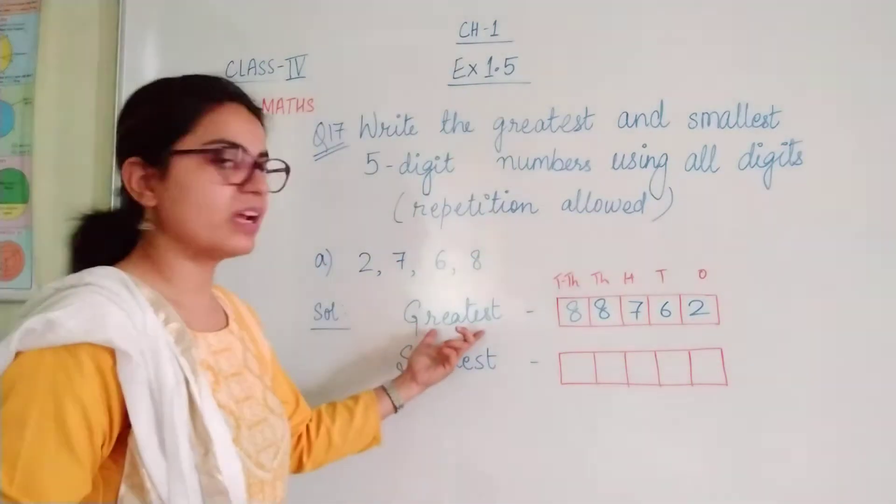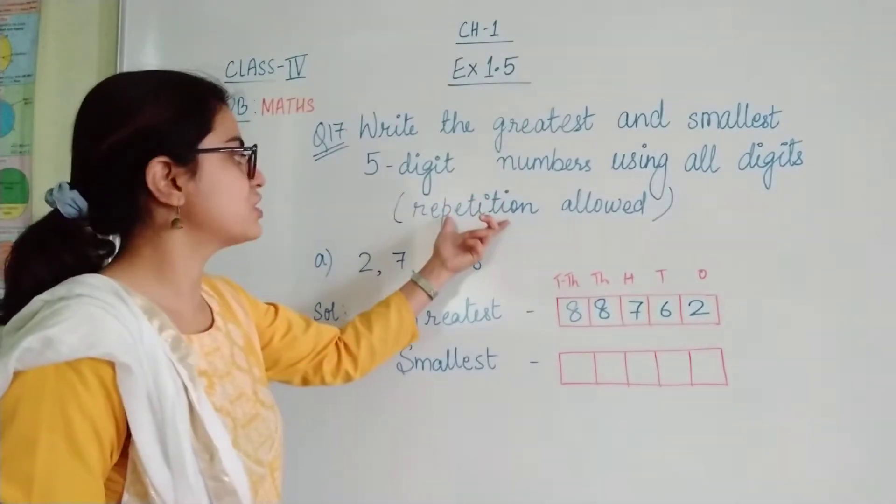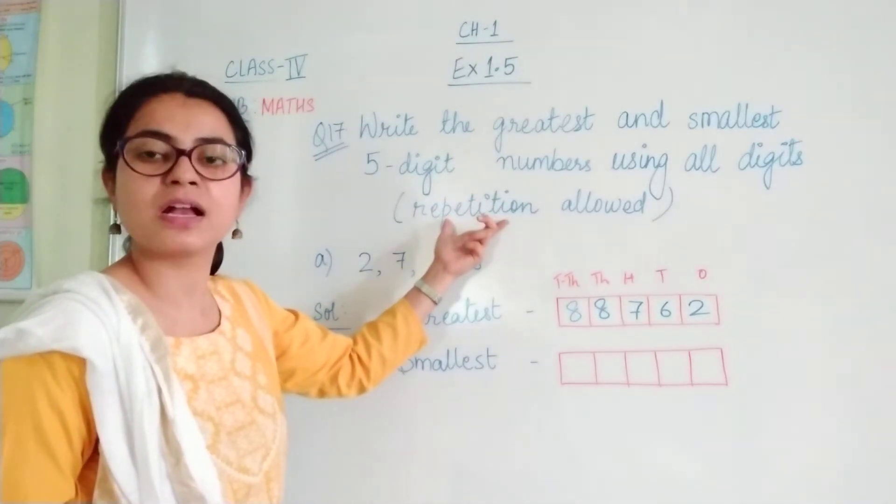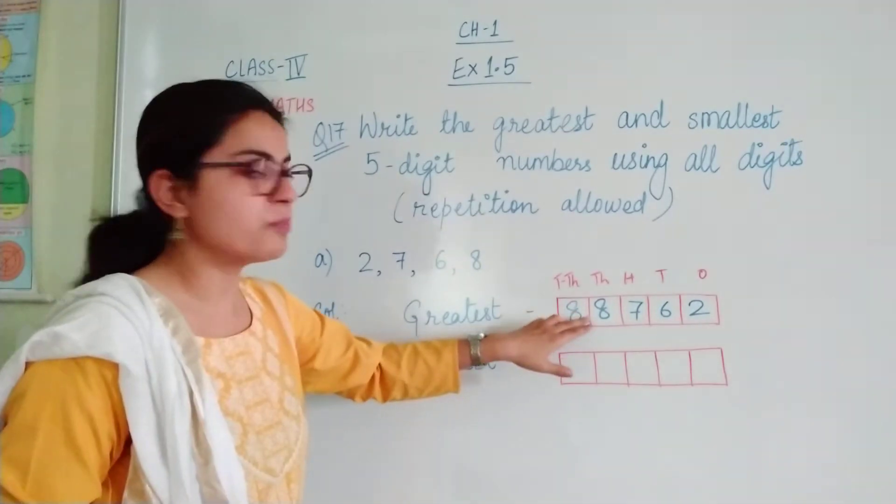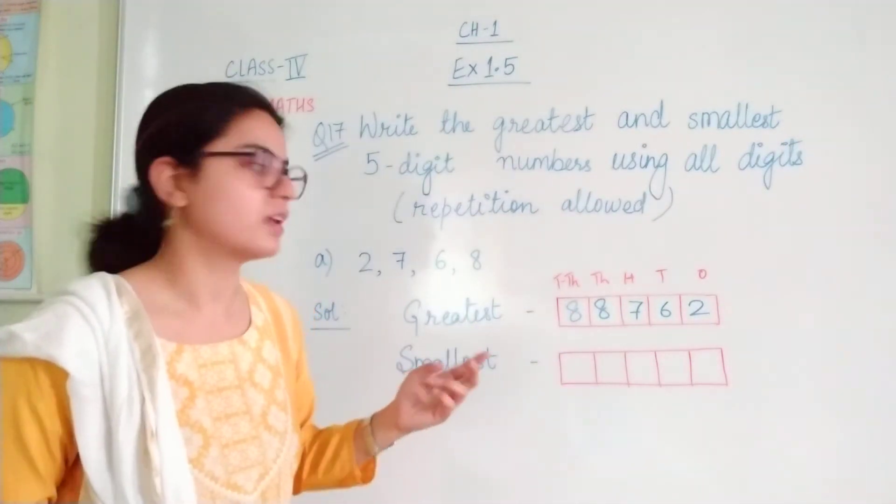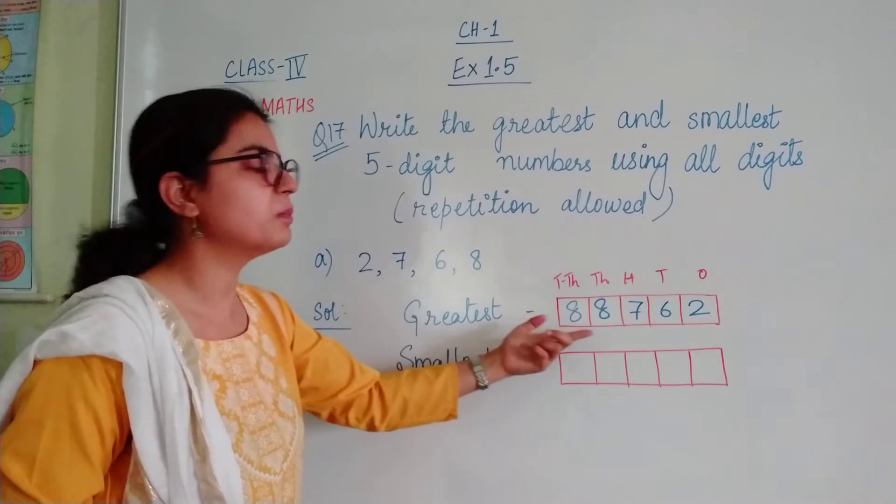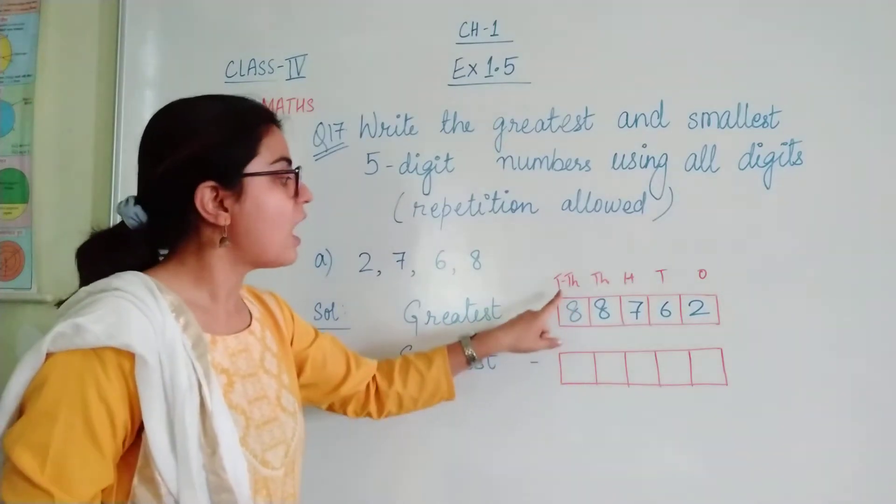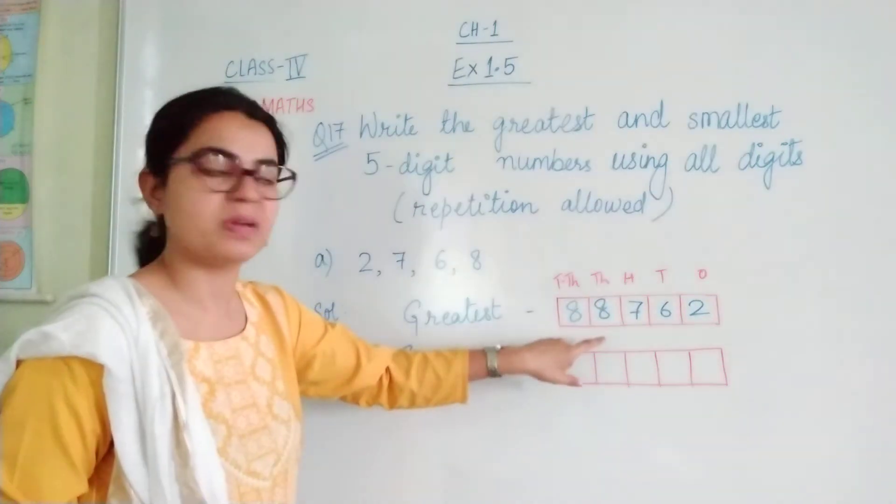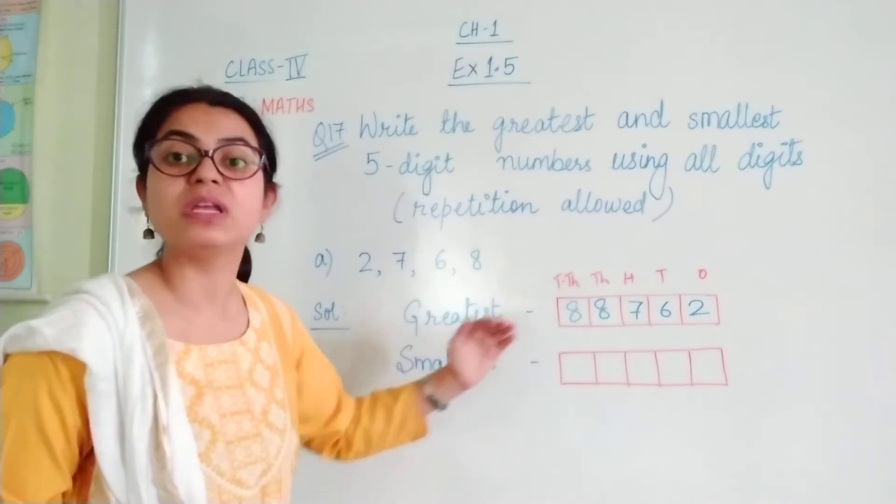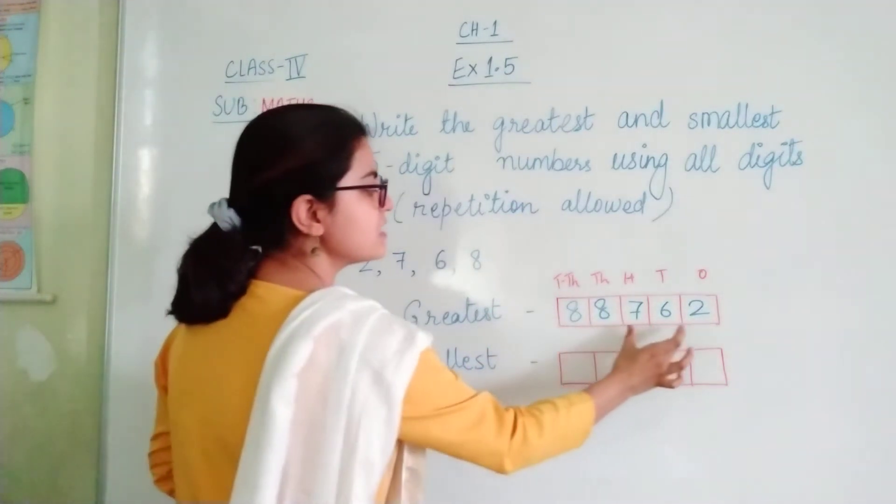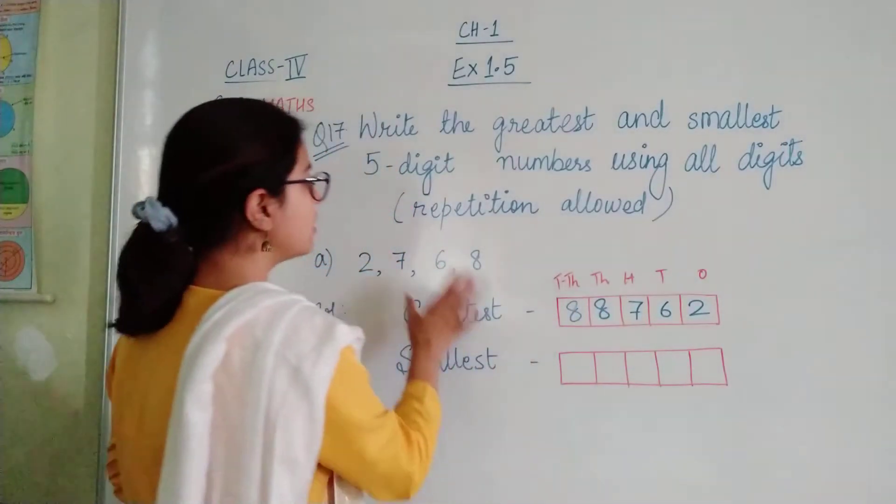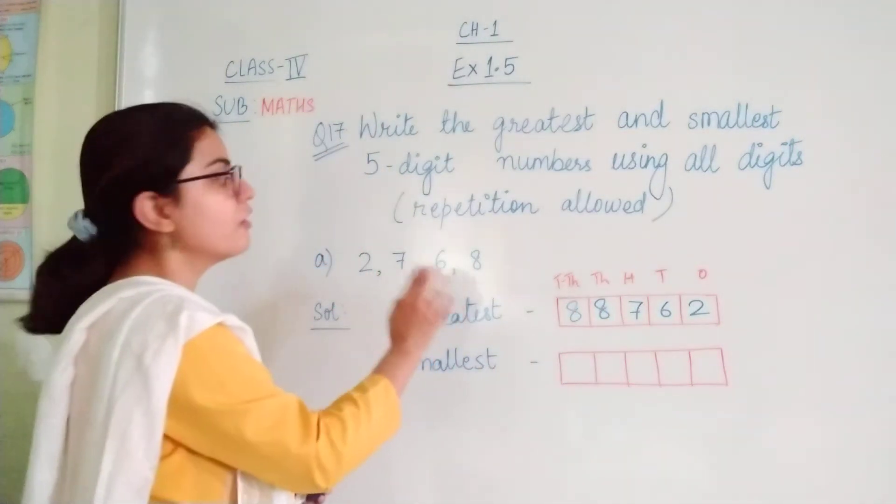Jab humme greatest number banana hai, repetition dohraaf ke saath, to hum kya karenge? Descending order ke liye, greatest number ko hi repeat karenge. Is mein se 8 sabse bada hai. Is liye hum 8 ko highest or second highest place values pe repeat karenge to increase its value. So we have got 88,762 as the greatest 5-digit number with repetition.